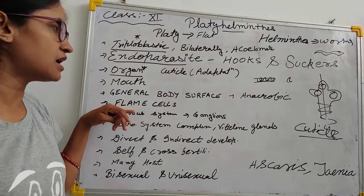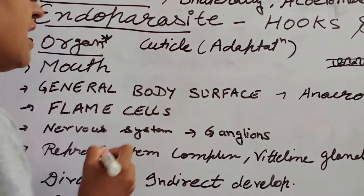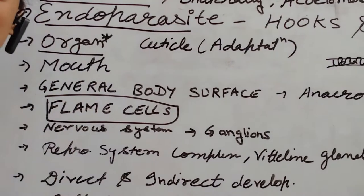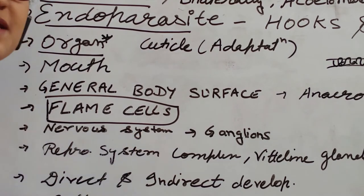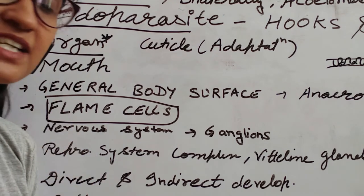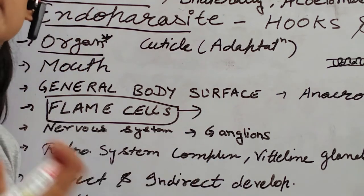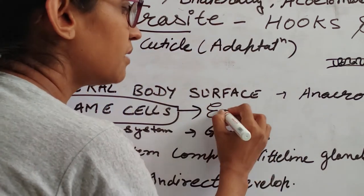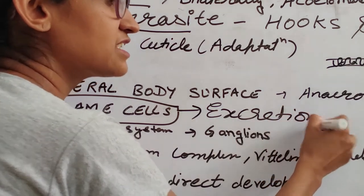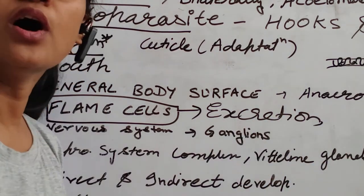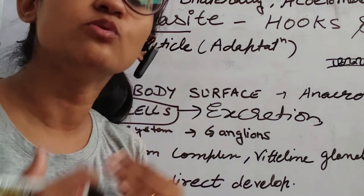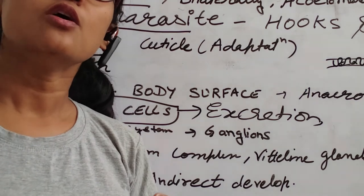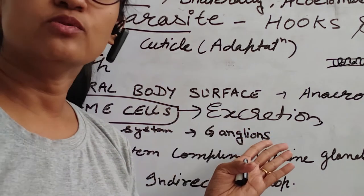Now let's talk about a special character: flame cells are present. These flame cells perform excretion and water and salt regulation — this is why we talk about osmoregulation.